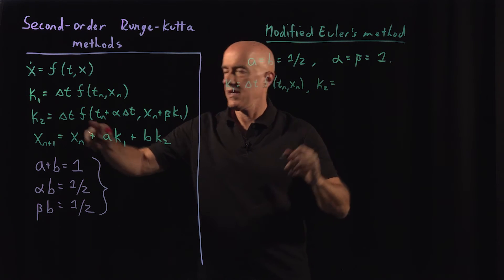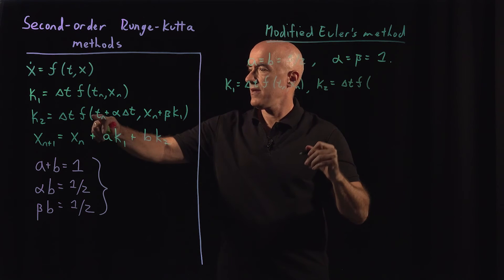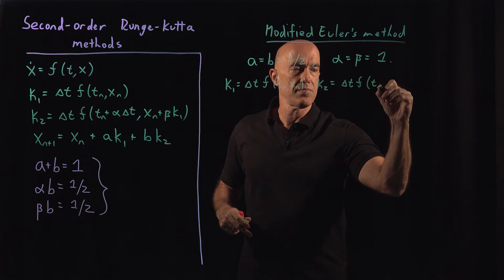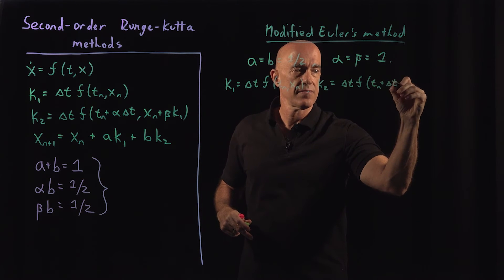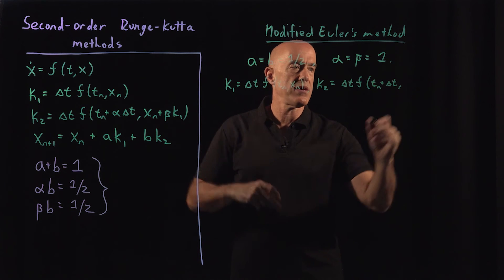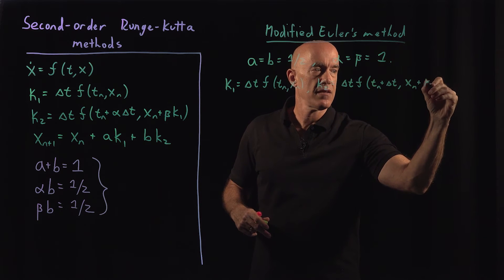And then in the second stage, k2 equals delta t times f of (t_n plus alpha delta t). Alpha is 1, so t_n plus delta t. And x_n plus beta k1, beta is 1, so x_n plus k1.